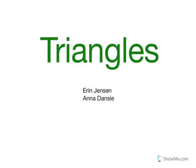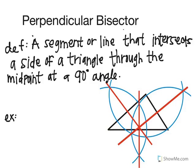Our topic is triangles. We're going to start with the perpendicular bisector. This is a segment or line that intersects a side of a triangle through the midpoint at a 90 degree angle.